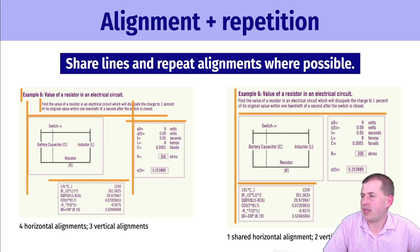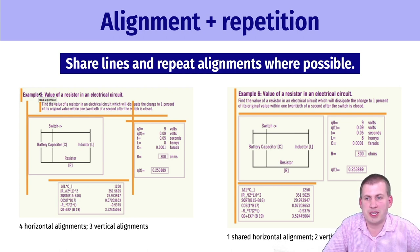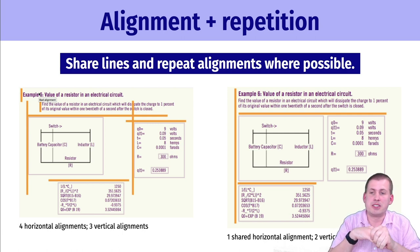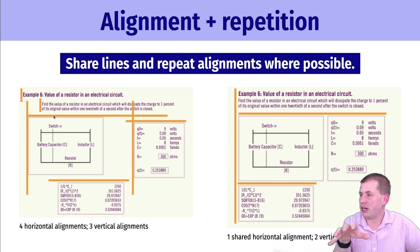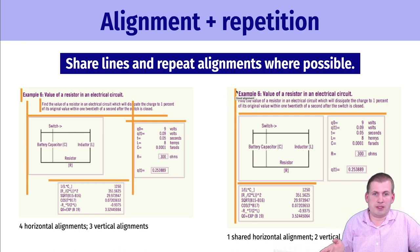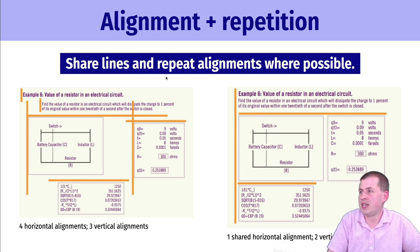One way of checking alignment when critiquing or creating designs is to draw lines — either mentally or using guidelines in tools like Adobe Illustrator, Adobe InDesign, Photoshop, or PowerPoint. These let you physically line things up. If you look at the first design here, there are multiple vertical and horizontal alignments. One way of improving that is getting them all to line up. In the improved version, we have one straight vertical line and two straight horizontal lines — those are the only alignments we have — and it looks a lot better.